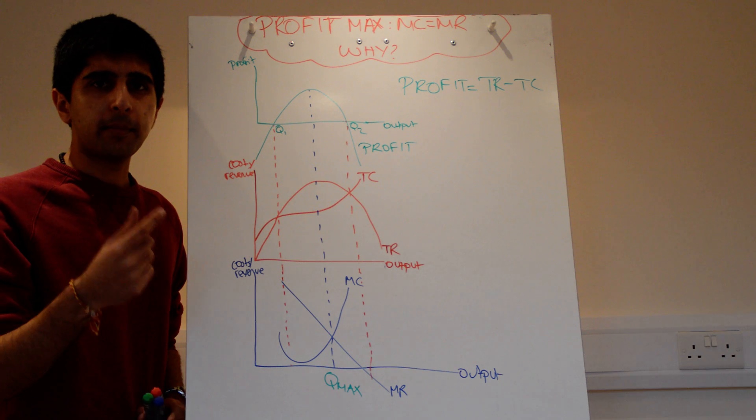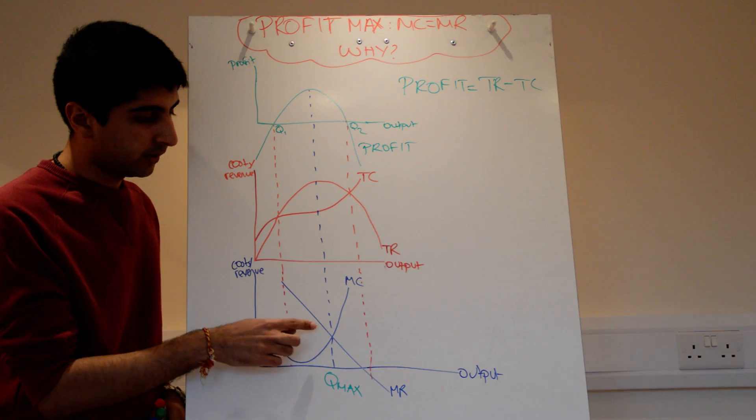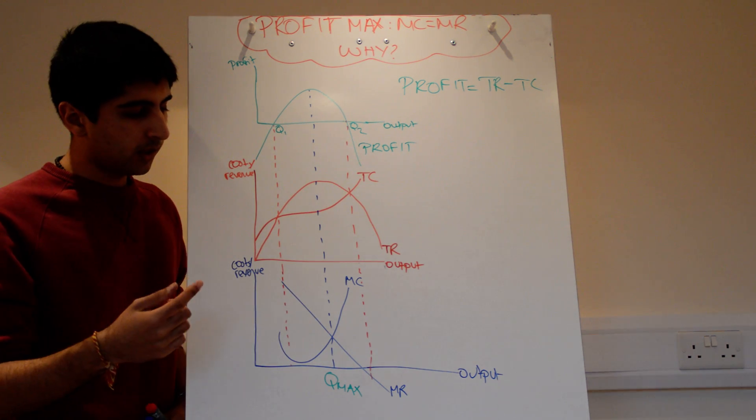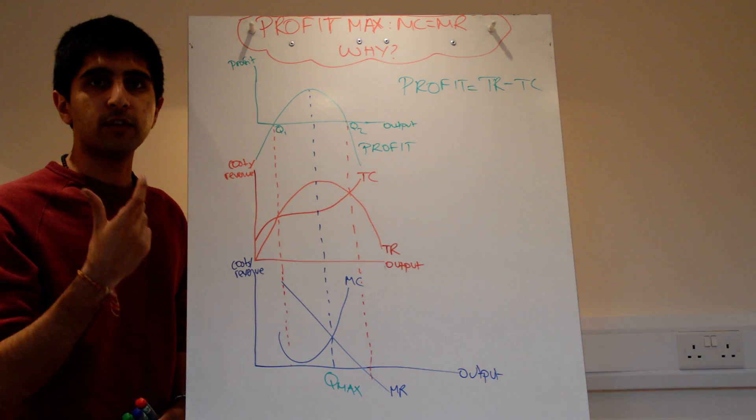Yes, the actual amount of profit being generated is falling each time because MR is getting closer and closer to MC. But as long as MR is greater than MC, by increasing production, we can increase profits.